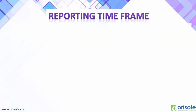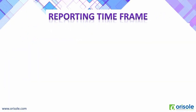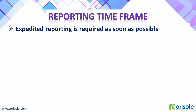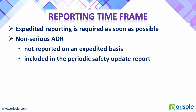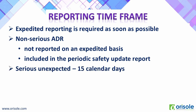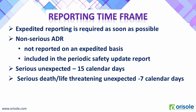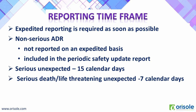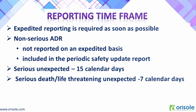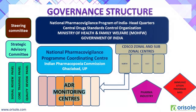Now let us see the reporting timeframe of adverse drug reactions. Expedited reporting is required as soon as possible. Non-serious ADRs are not reported on an expedited basis; they are included in the periodic safety update report. But serious unexpected ADRs are to be reported within 15 calendar days. Serious death or life-threatening ADRs should be reported within 7 calendar days.